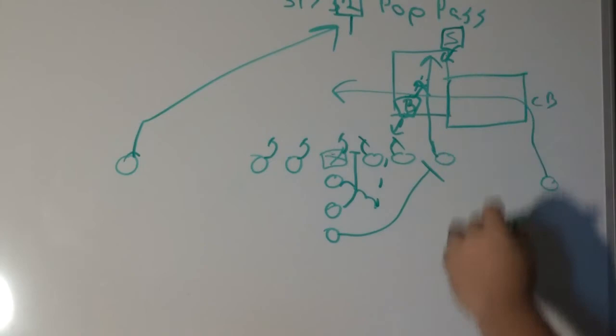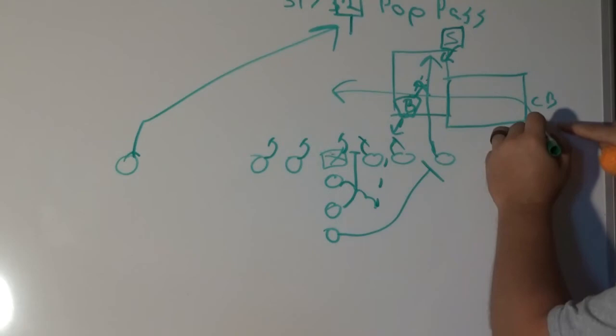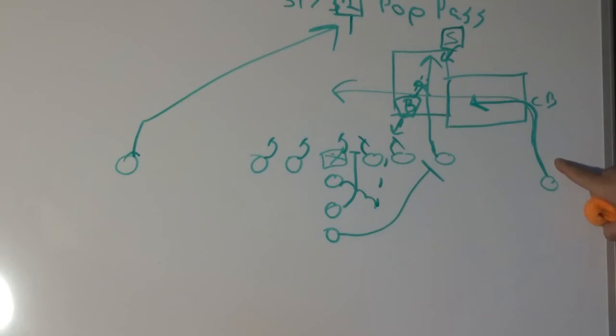The cornerbacks are usually going to have outside leverage, which means he'll be able to release to the inside, come up, and then come right here. So this wide receiver can push upfield, stop, and break in.